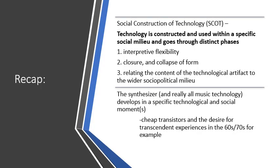I hope you enjoyed the lecture and all the linked videos. Just a little recap: the social construction of technology is an important way of understanding how technology is invented, adopted, and eventually changed, and how it fits within a very specific social milieu. The three stages technology goes through are: interpretive flexibility when first invented, then a closure and collapse of form when people settle on what form they like, and finally wider adoption with consequences in the broader social and political environment. Technology does not determine human action, and is not invented in a vacuum — it is very much part of our social and cultural context.